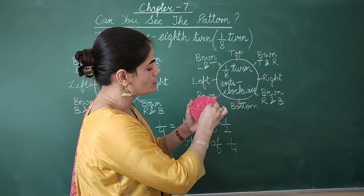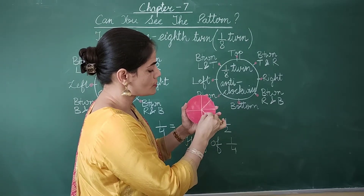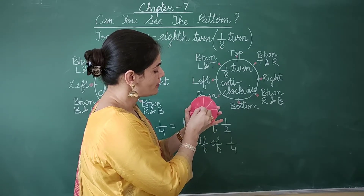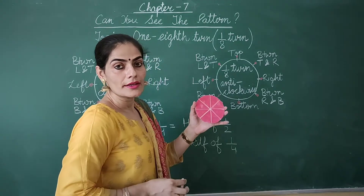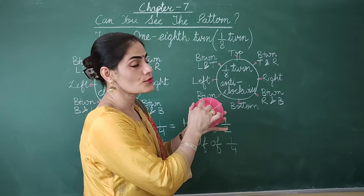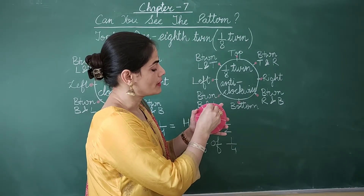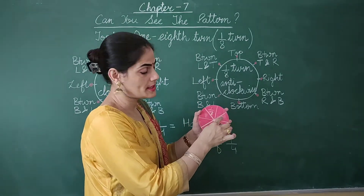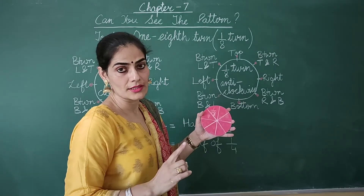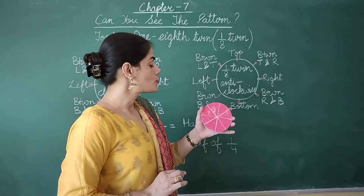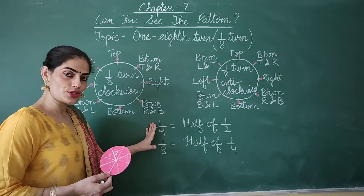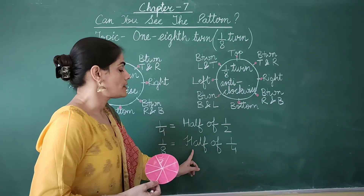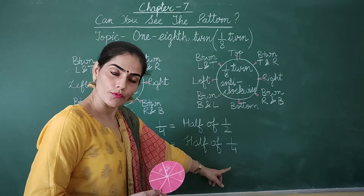If I divide this quarter into two equal parts — this quarter is divided into two equal parts, this quarter also into two equal parts, and this also into two equal parts — what fraction will you write for one part? It will be one by eight. Why? There are eight equal parts and we have taken one part out of those eight equal parts. So one-eighth is equal to half of one-fourth.